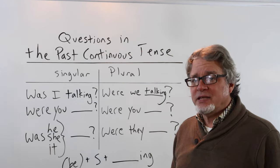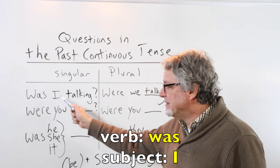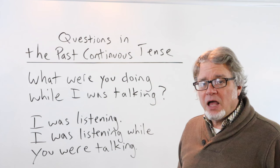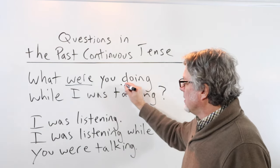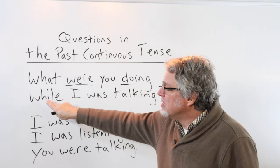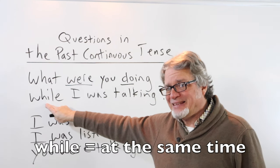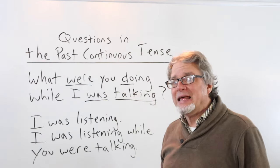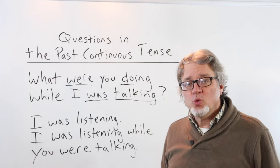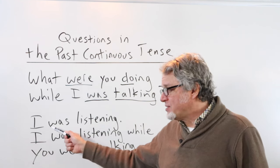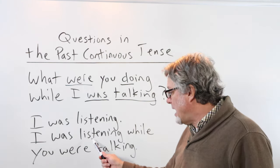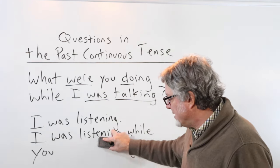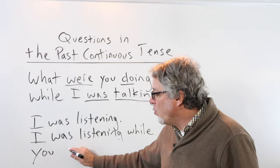Here is the verb talk in the past continuous tense. The verb be goes first, then the subject: Was I talking? Were you talking? What were you doing while I was talking? This uses while to connect two simultaneous actions. So these two things happen at the same time. You can answer: I was listening. Or: I was listening while you were talking. You could also say: I was listening while you talked.